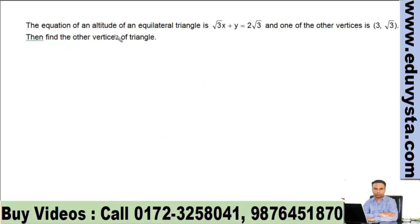Try this equation. The equation of an altitude of an equilateral triangle is √3x + y = 2√3, and one of the other vertices is (3, √3). Then find the other vertices of the triangle. Okay, let's draw the diagram without referring to coordinate axis. This is one of the sides or one of the altitudes of the equilateral triangle. Further, one vertex of the triangle is (3, √3).